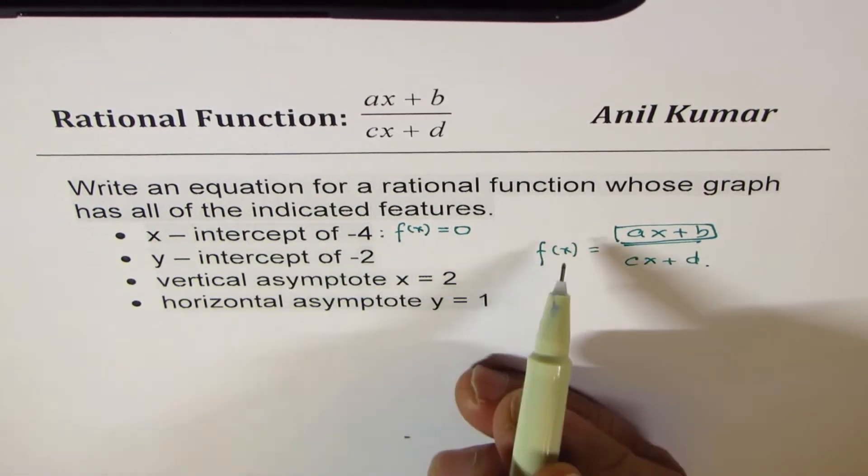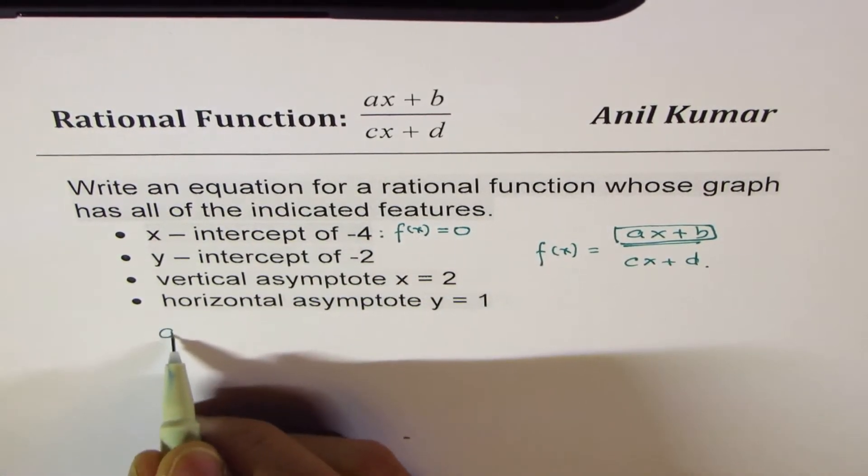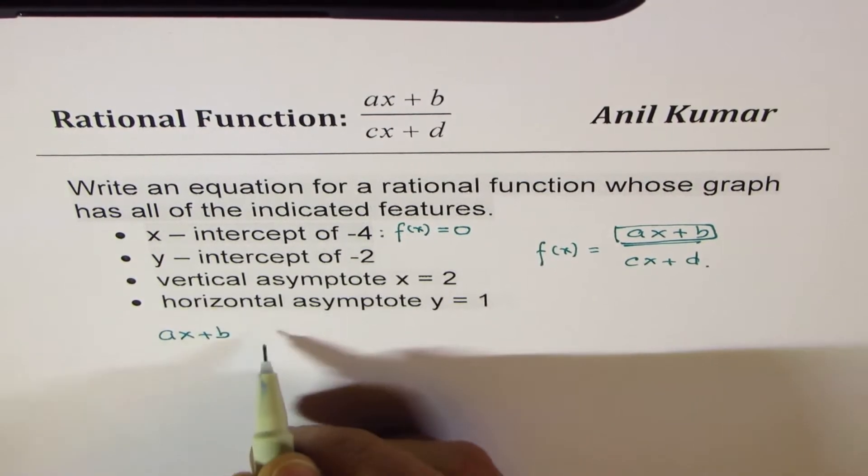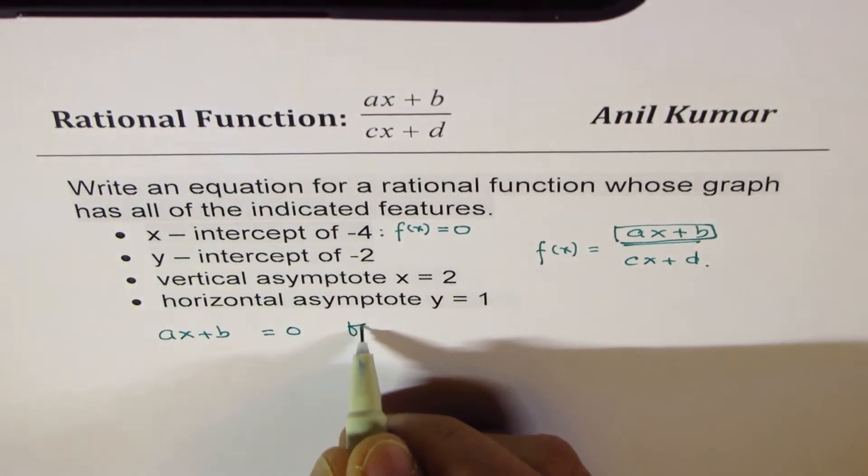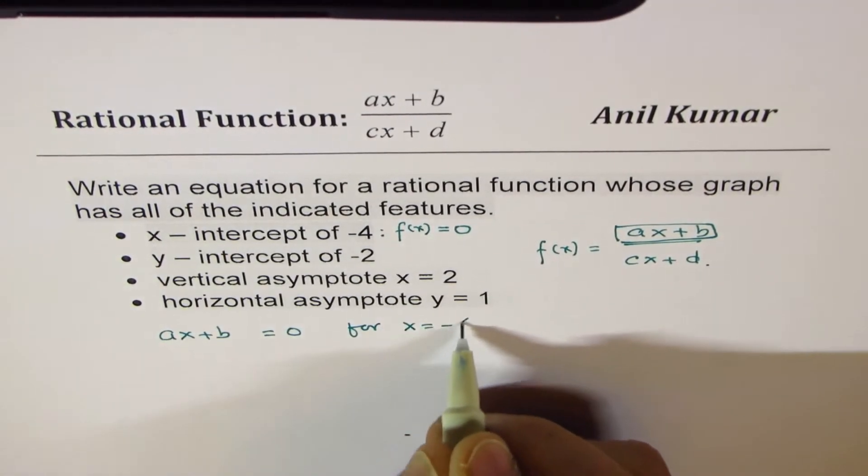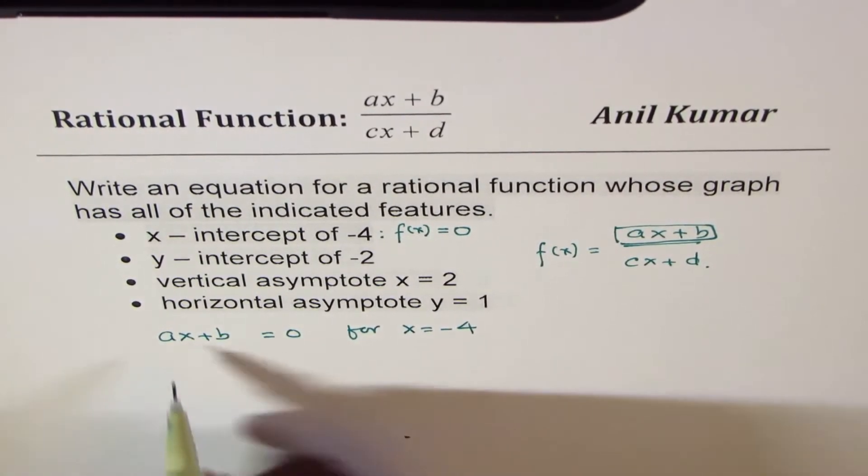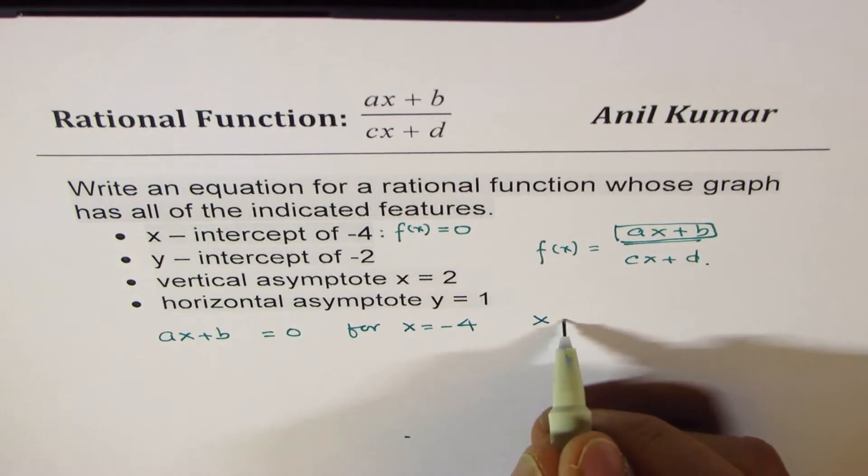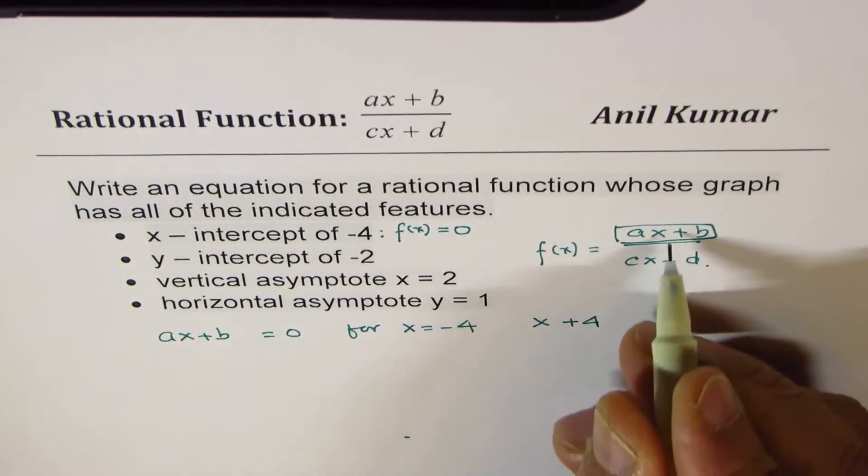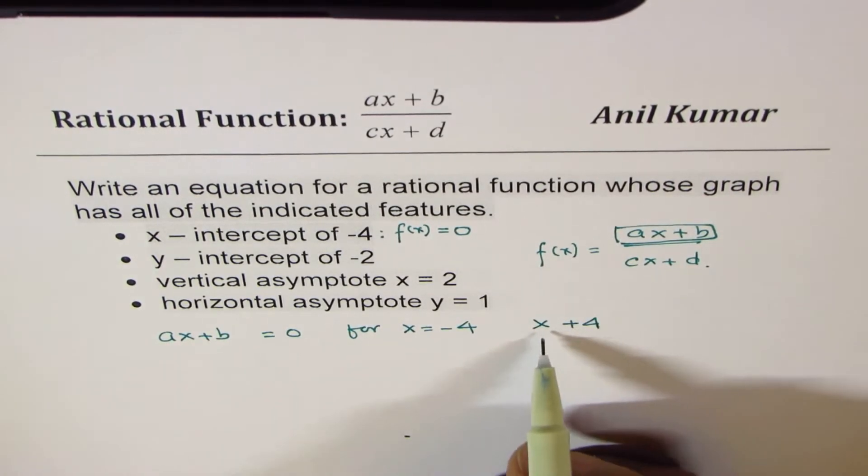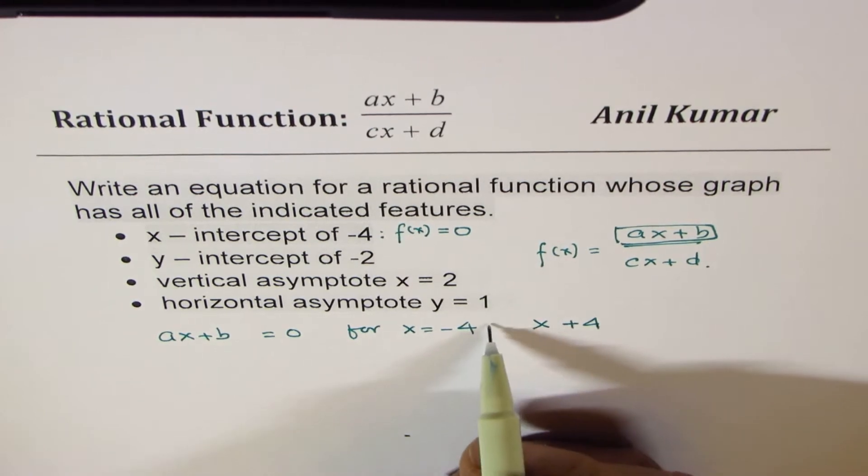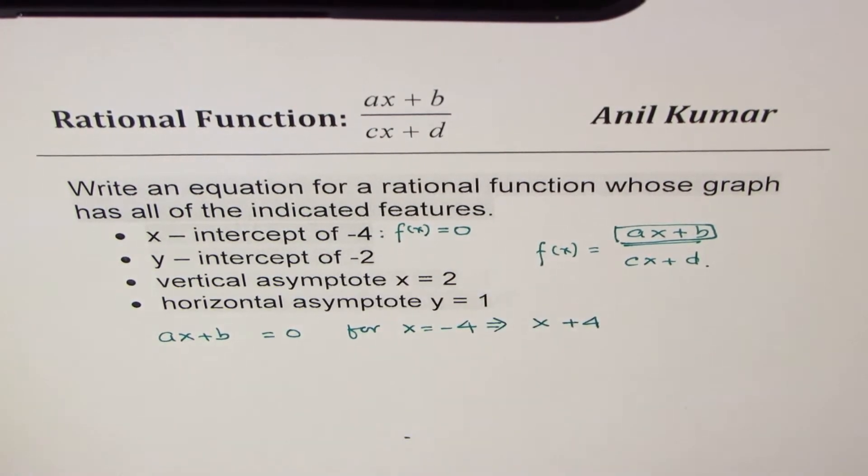Therefore, the expression should be what? We want ax plus b to be equal to 0 for x equals to minus 4. Think like this. Clearly, it means that x plus 4 should come in the numerator. Only then it will be 0 for x equals to minus 4. So we get numerator as x plus 4.